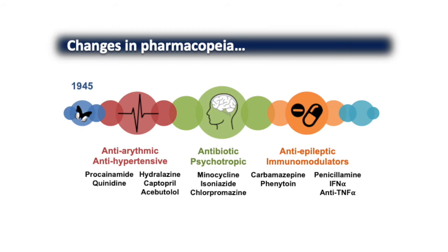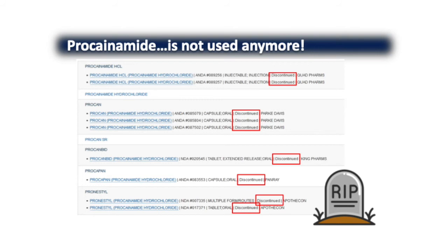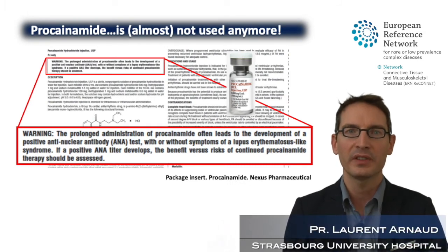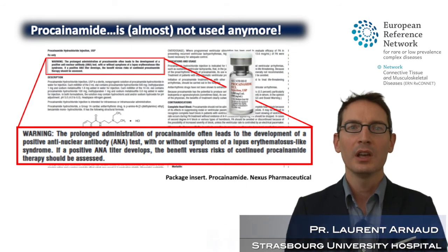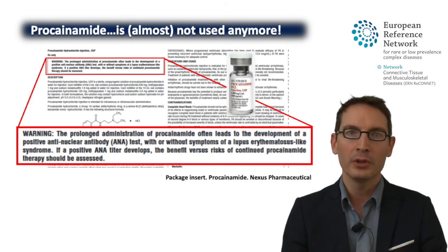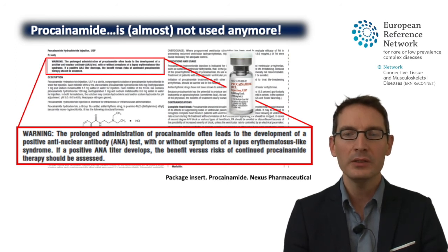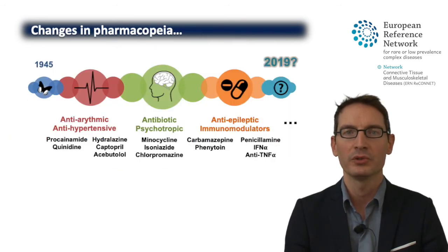What is very striking is that the drugs most associated with DEAL are actually very old drugs. Procainamide has the strongest association with DEAL — more than 50% of DEAL cases after one year — but this drug has been discontinued in most countries. The prescribing information for procainamide contains a warning that prolonged administration may lead to the development of positive anti-nuclear antibodies with or without symptoms of lupus-like syndrome.